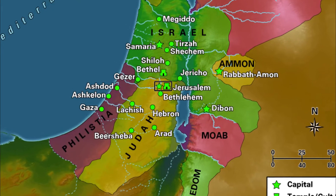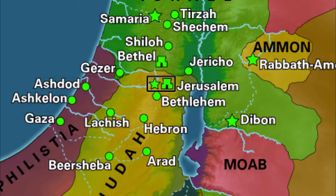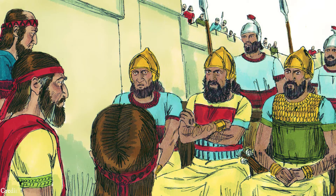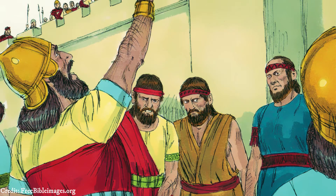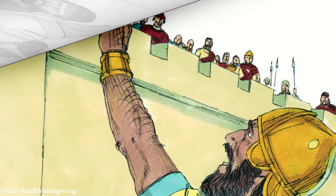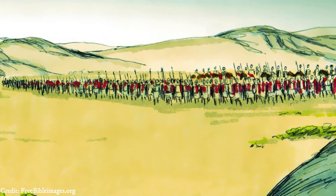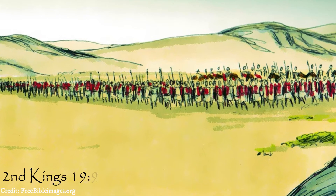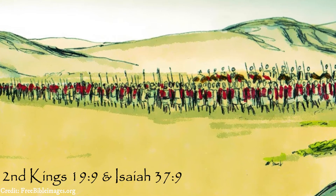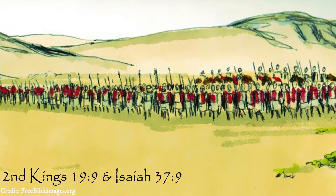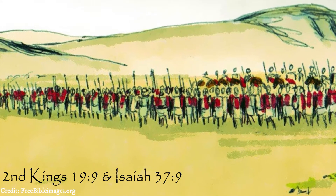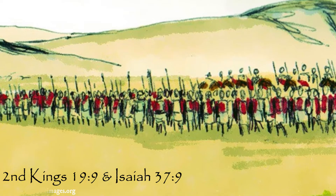As Sennacherib laid siege to the outer cities of Judah, the noose around Hezekiah and Jerusalem tightened. This was made worse by Sennacherib sending messengers and an advanced army to Jerusalem to intimidate and threaten Hezekiah and the inhabitants of Jerusalem. The Assyrians, in 2nd Kings chapter 18 verse 21, told Hezekiah and the Jews of Jerusalem that if they trusted in their ally Egypt for help, it would ultimately fail them. This proved to be true, as even though 2nd Kings chapter 19 verse 9 and Isaiah chapter 37 verse 9 states that Tirhakah came out with an army from Egypt, presumably to support their ally in Judah, the Egyptian offensive was unsuccessful and did not stop the Assyrians.